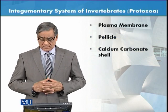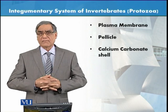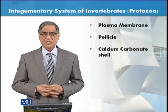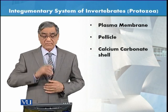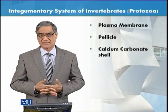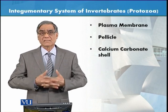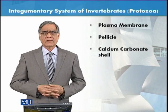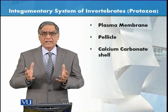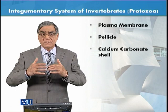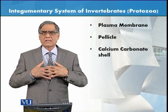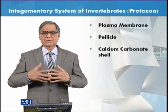The integumentary system in very simple animals or cells is the plasma membrane, also called the cell membrane. This is the integumentary system at its most basic level. The cell is delimited by this membrane, which is very thin.